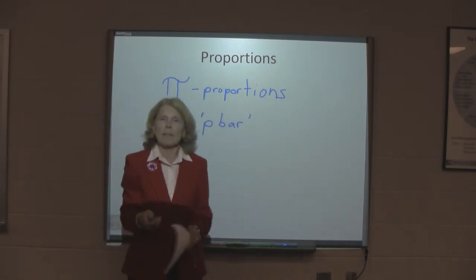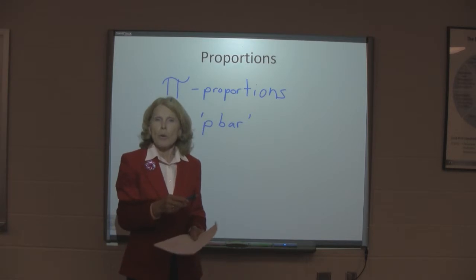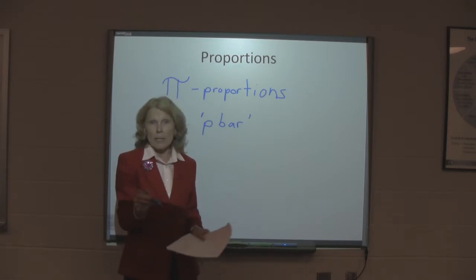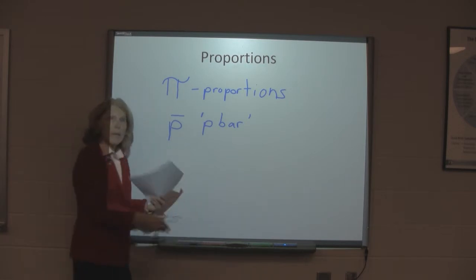Pi is the Greek symbol and then the null hypothesis will be p-bar. So the null hypothesis, which we'll get to in a few minutes, is going to be noted in terms of pi, the Greek symbol. And then the test we will use from the sample will be p-bar.